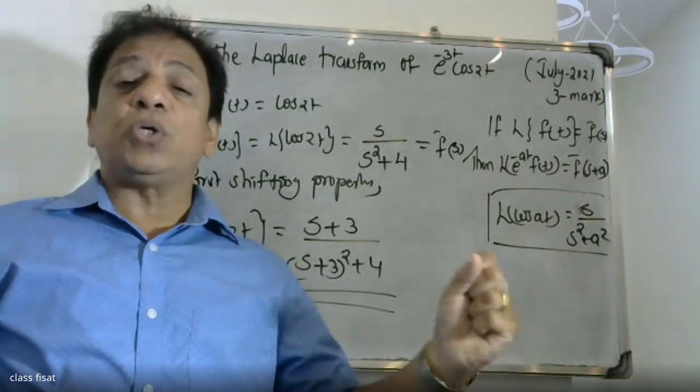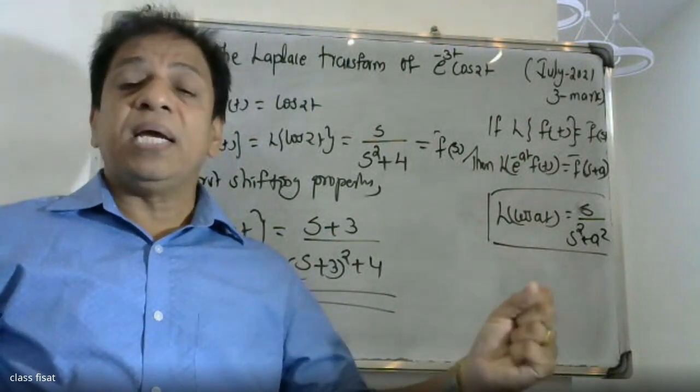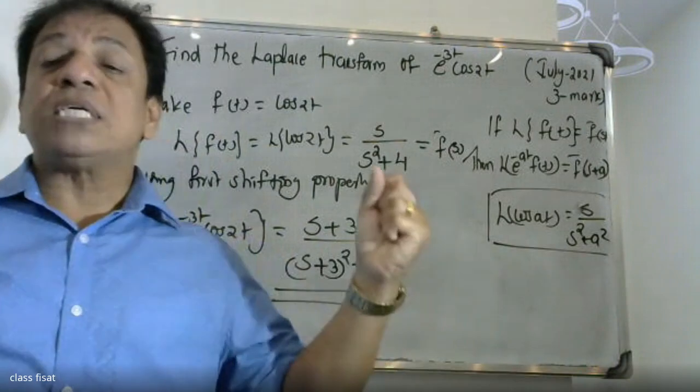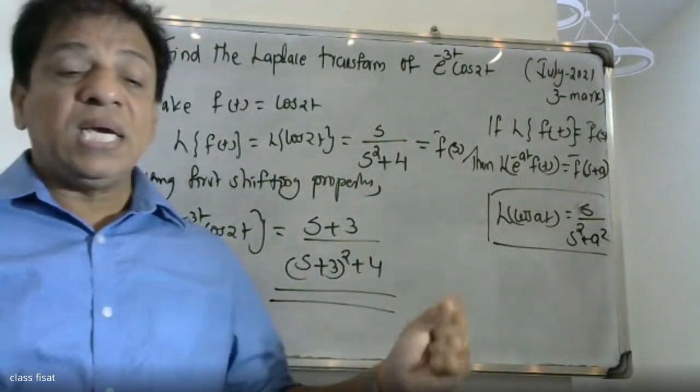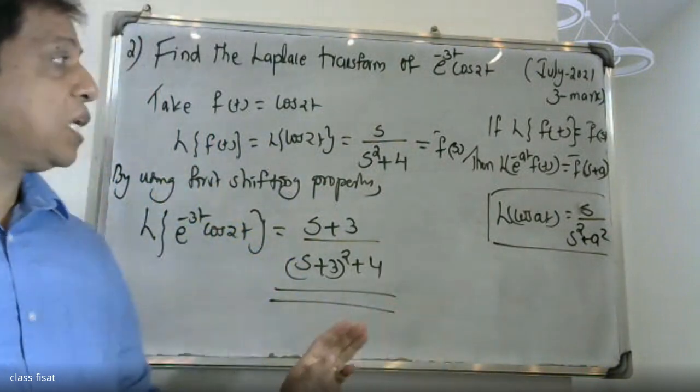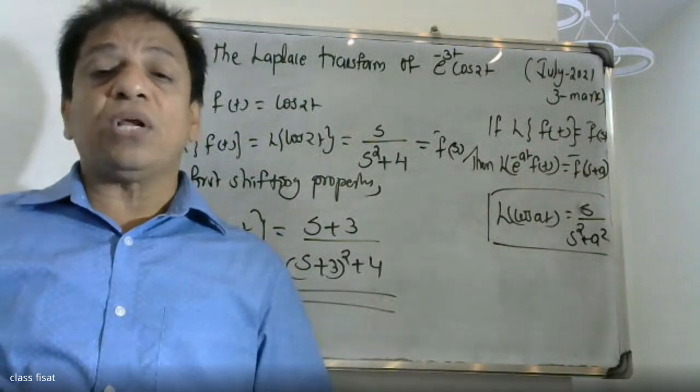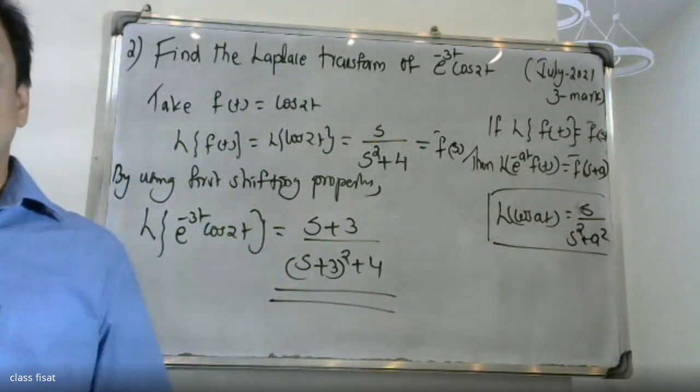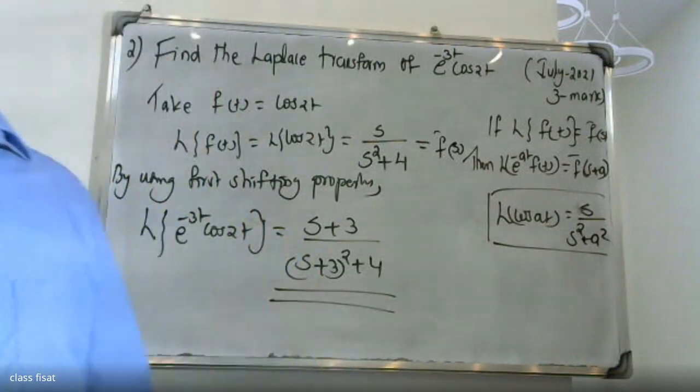For e raised to minus 3t cos 2t, the Laplace transform answer is obtained by replacing s with s plus 3. The numerator becomes s plus 3, and the denominator becomes s plus 3 squared plus 4. This is the answer for the July 2019 3 marks question.